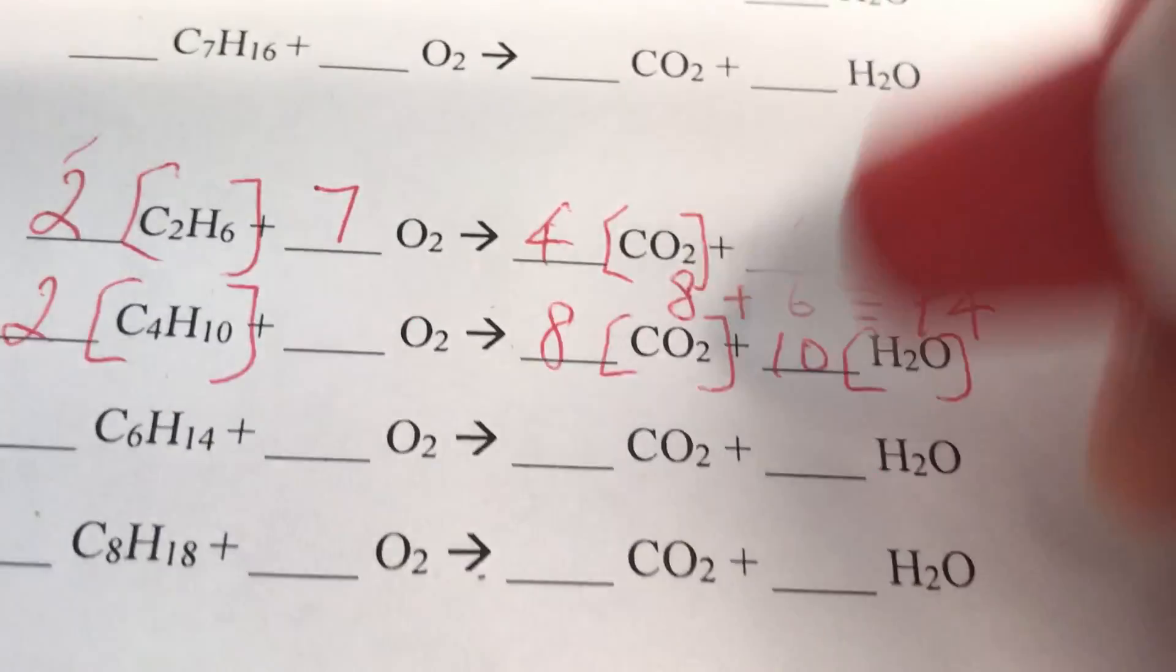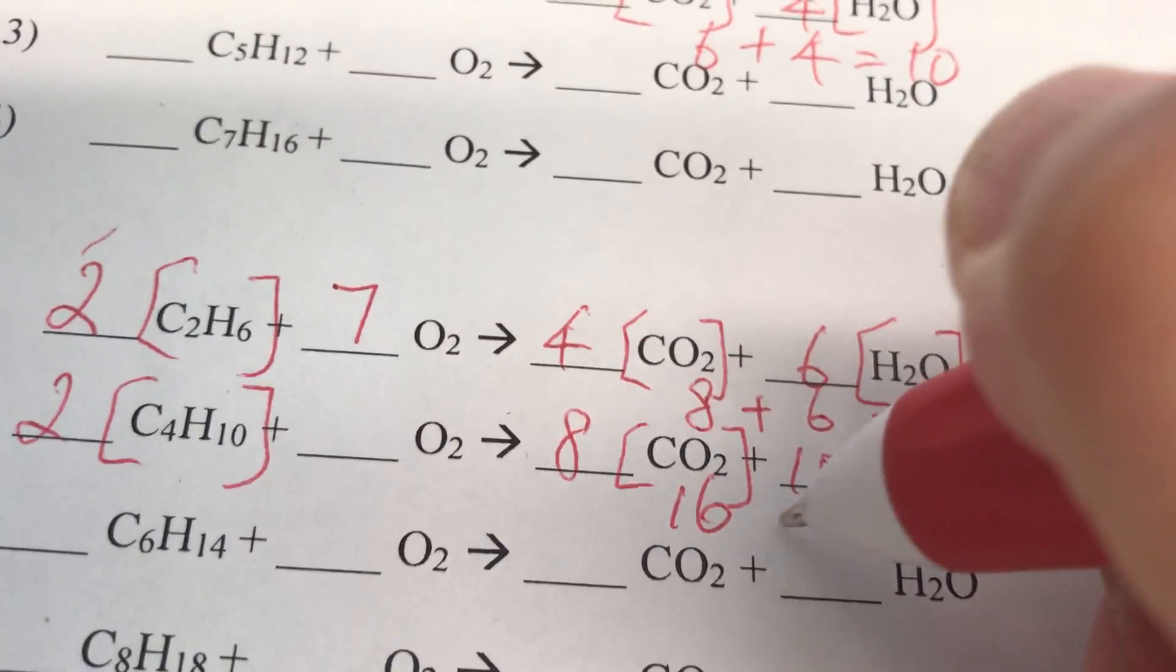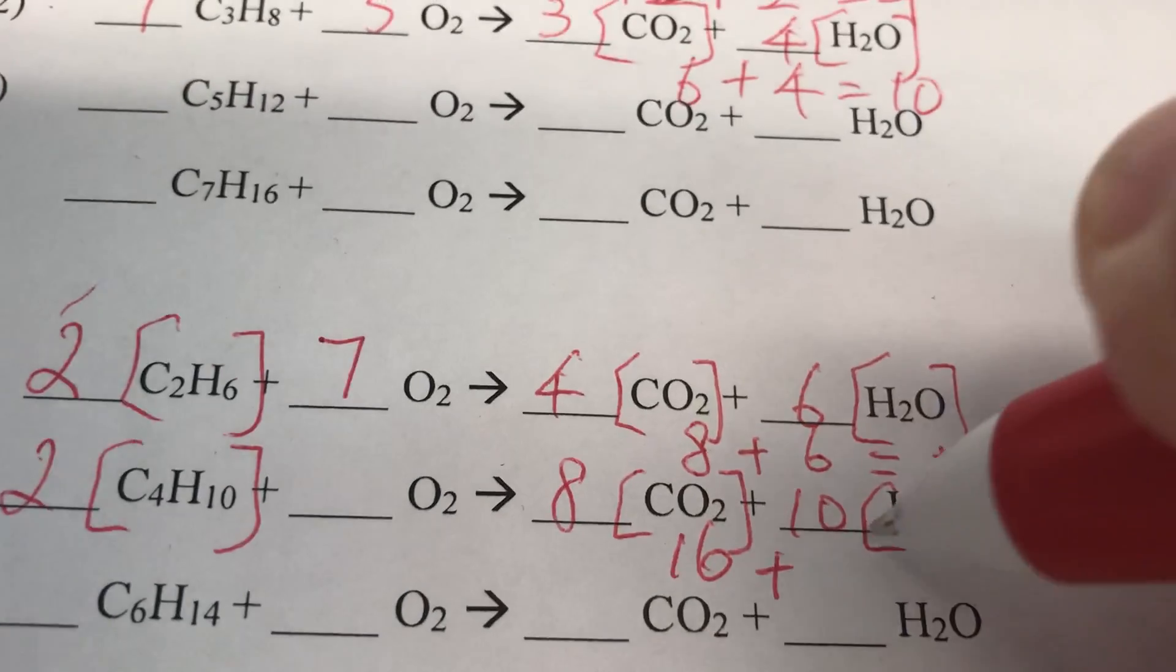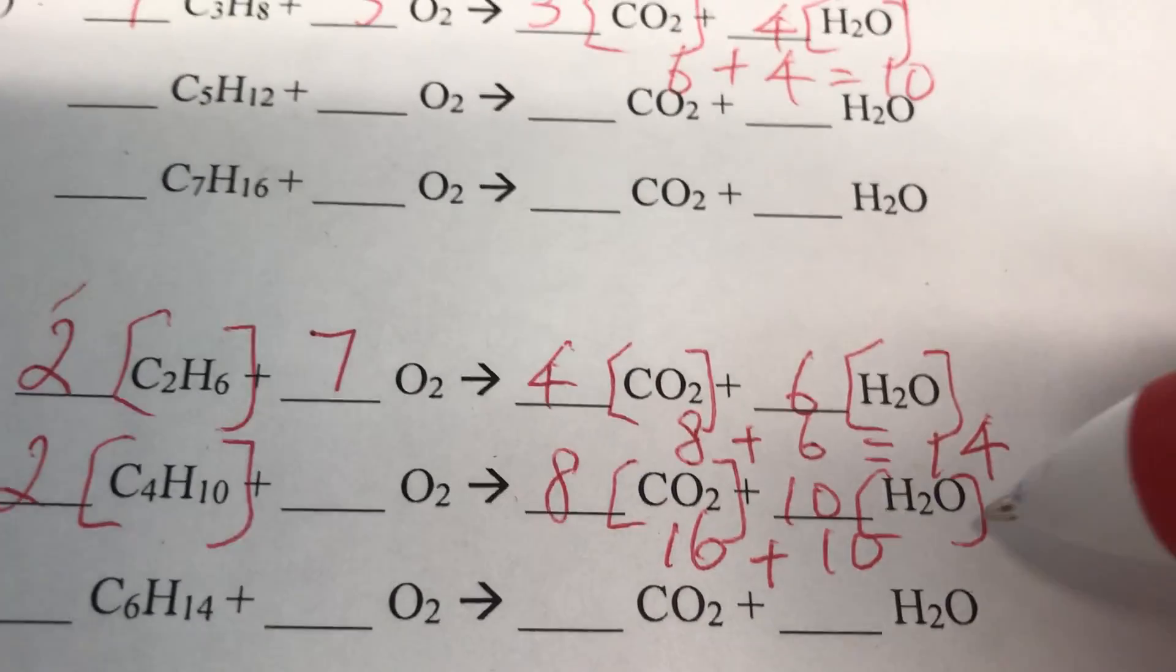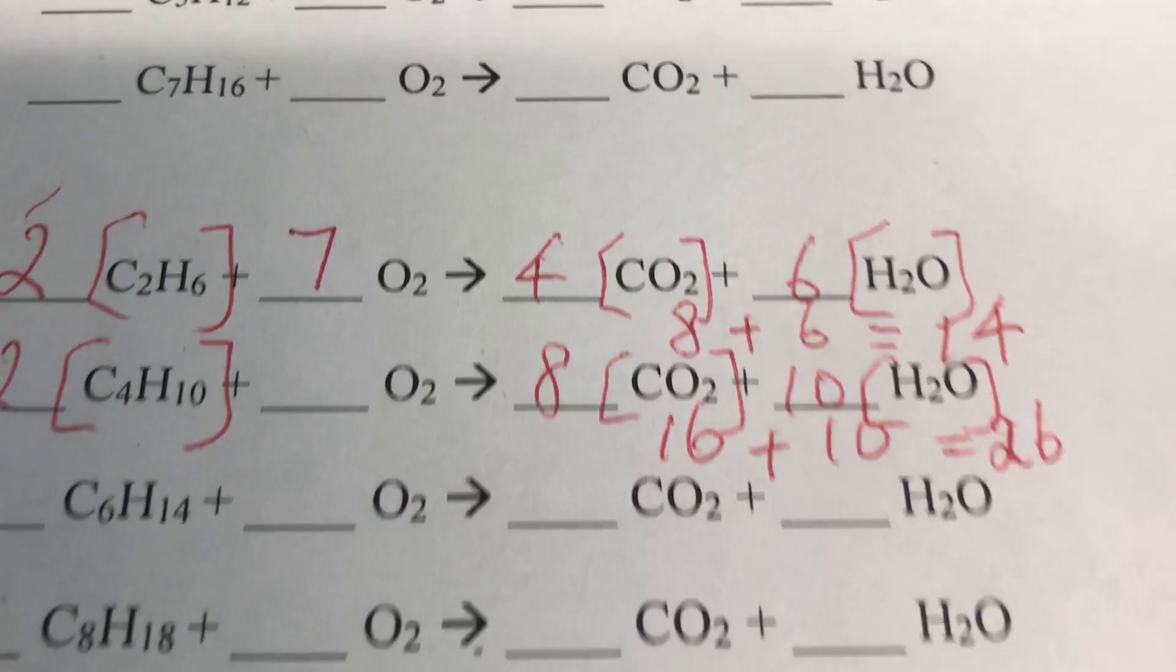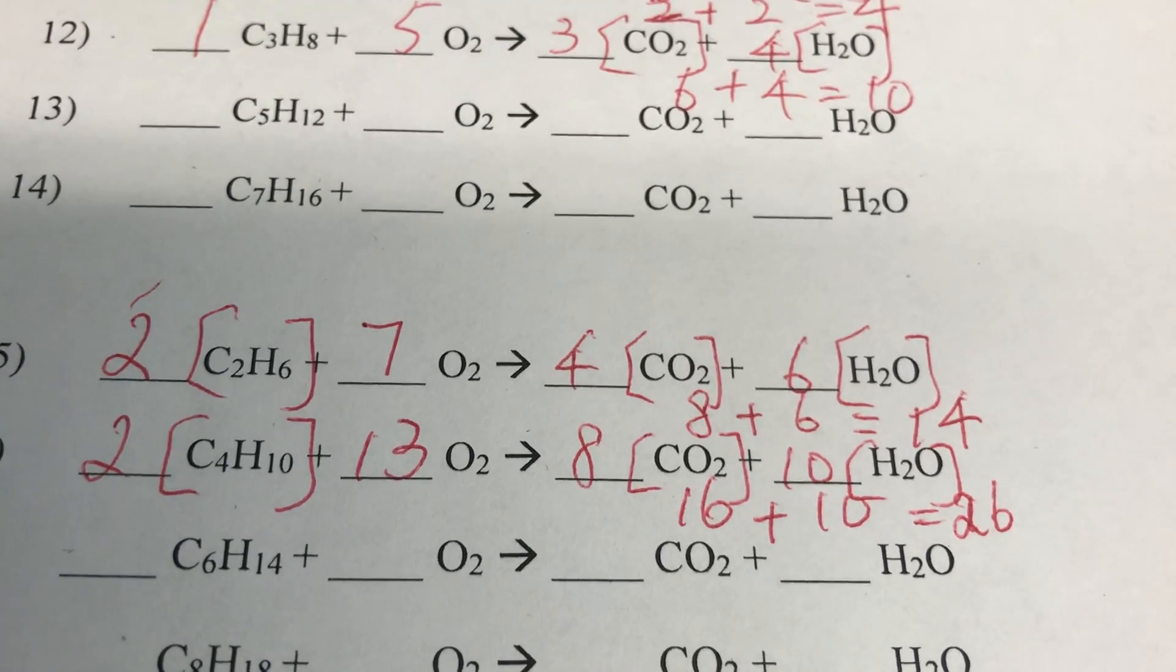Last thing is oxygen. 8 times 2 is 16 plus 10 times 1 is 10. 16 plus 10 is 26. 26 divided by 2 is 17. So this is also balanced.